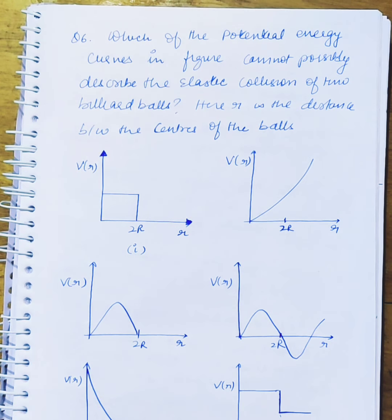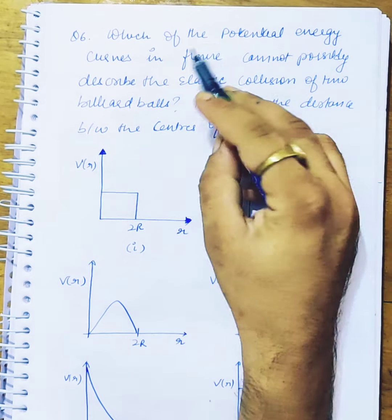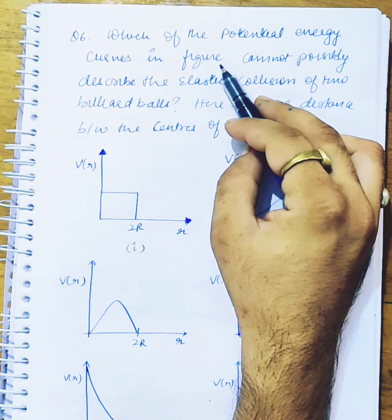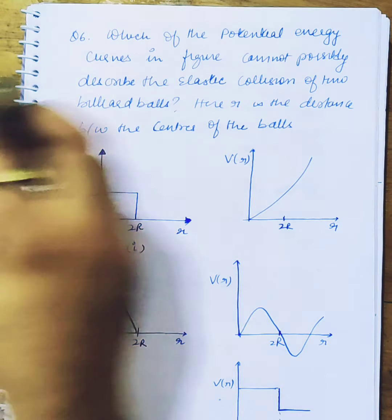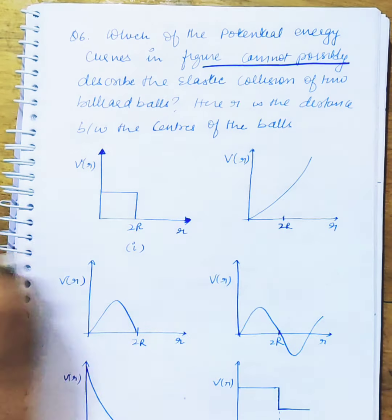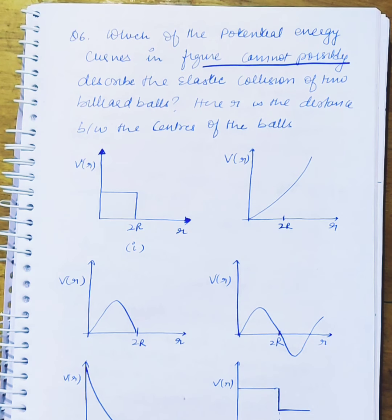This is a very important question of NCERT. He says, which of the following potential energy curves in figure cannot possibly describe the elastic collision of two billiard balls.